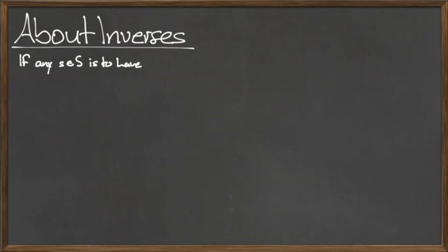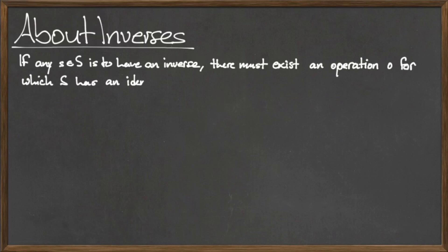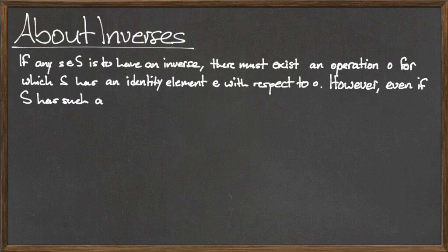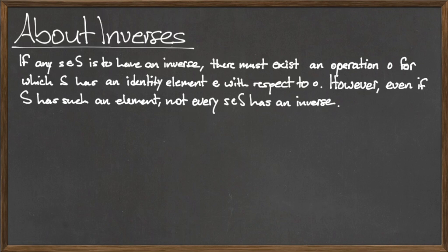Now we will discuss a few remarks about the inverse in general. The first remark is that if any arbitrary element little s in the set capital S has an inverse, then there must exist a binary operation dot for which s has an identity element e. However, even if the set S has such an identity element e, it is not the case that every element little s in the set capital S has an inverse. In other words, an identity element e must exist in order for inverse elements to exist, but even if such an identity element does exist, not every element of the set capital S is guaranteed to have an inverse.